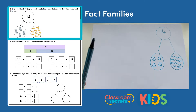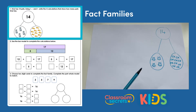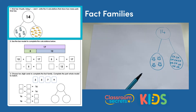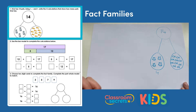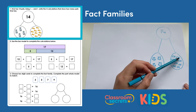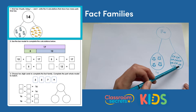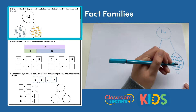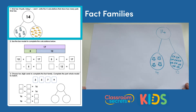Here we have a part-whole model but we have a number of animals in each part instead of the numeral given. Let's count up how many animals there are in each part. We've got our whole number — we know that's 14. So let's count the cats: one, two, three, four — we've got four cats. And now for the fish: one, two, three, four, five, six, seven, eight, nine, ten — ten fish. So I know my numerals: 14, 4 and 10.